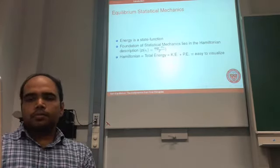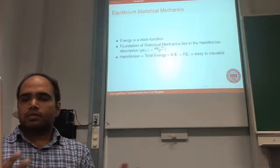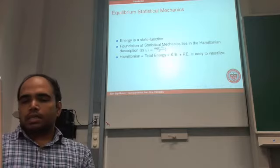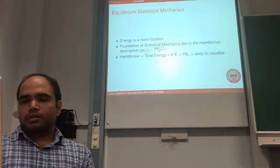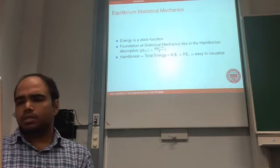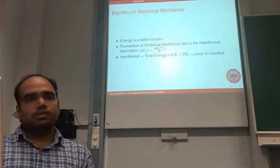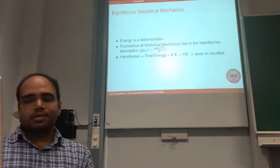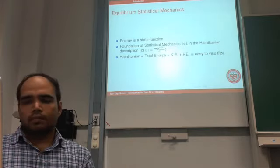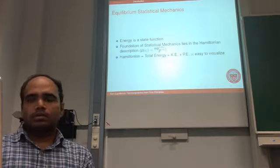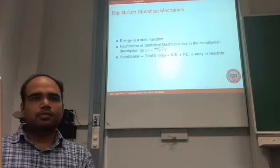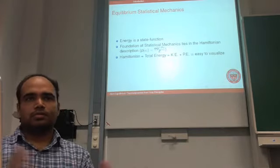In equilibrium statistical mechanics, all current statistical mechanics formulations are for equilibrium systems. Energy is still a state function. The statistical distribution is the Boltzmann distribution — exponential of minus beta times the Hamiltonian — and Z is the partition function, the total number of possible states. The Hamiltonian is the kinetic plus potential energy, and it is used everywhere in physics because it represents total energy and is easy to visualize.